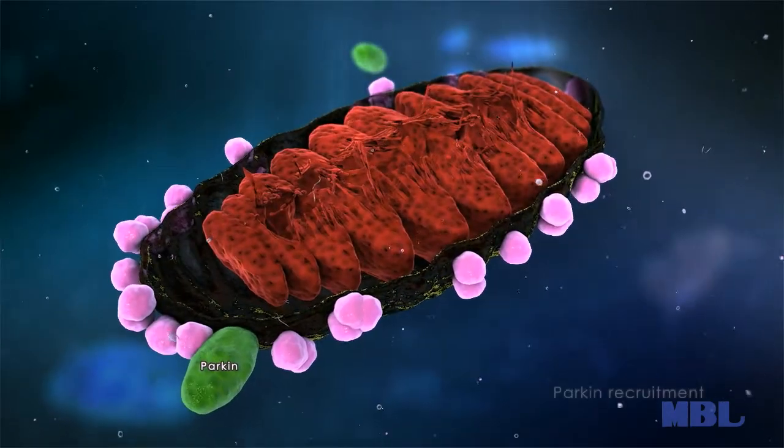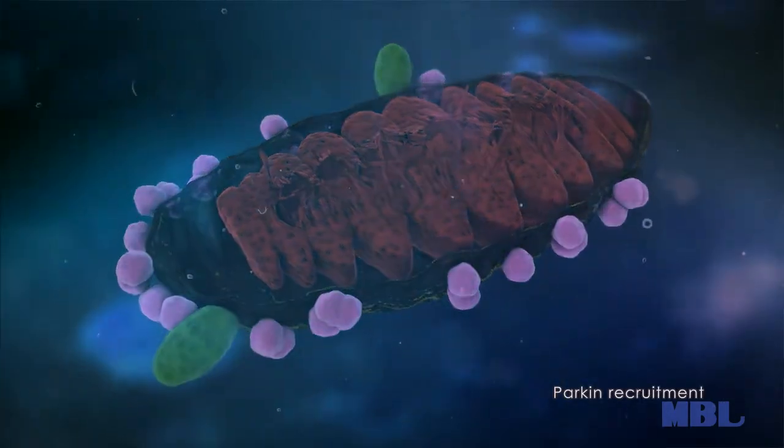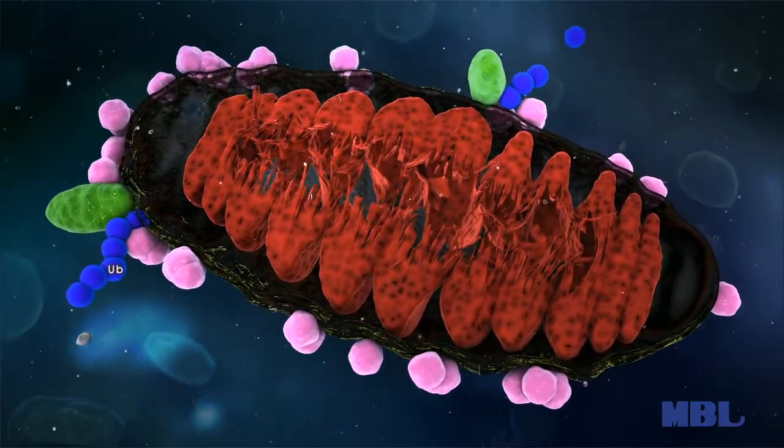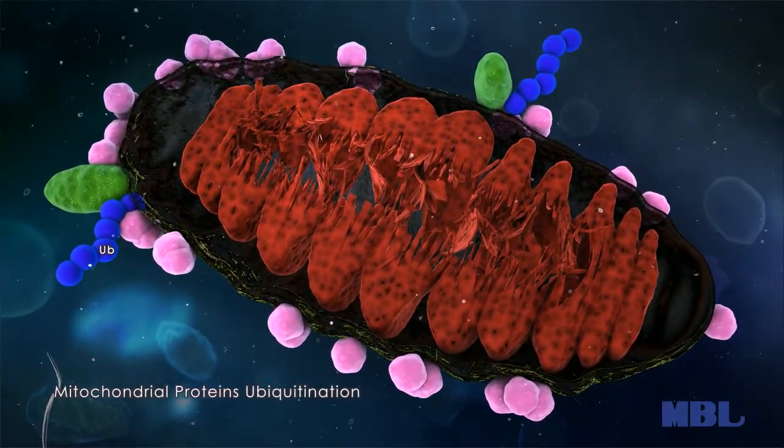PINK1 recruits a ubiquitin ligase, PARKIN, to the damaged mitochondria. Mitochondrial outer membrane proteins are then ubiquitinated through the ubiquitin ligase activity of PARKIN.